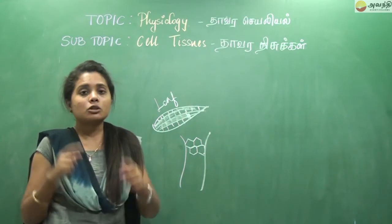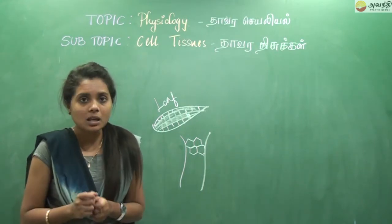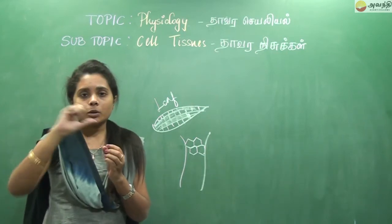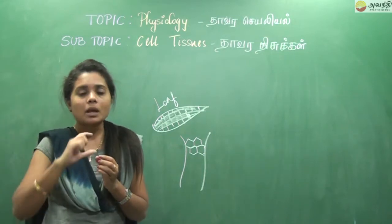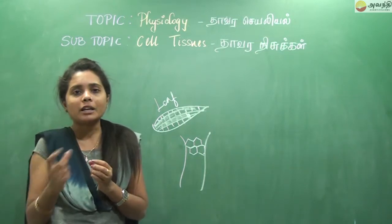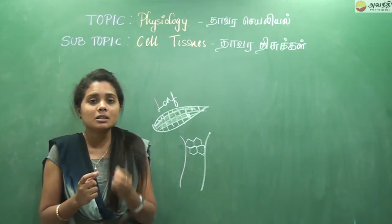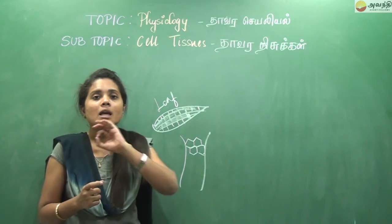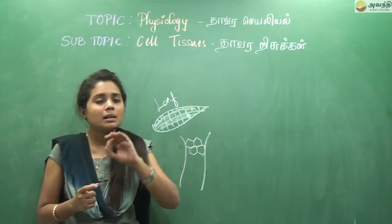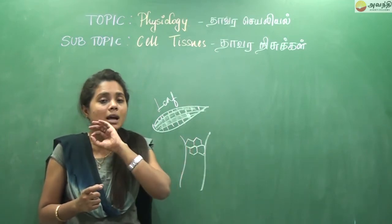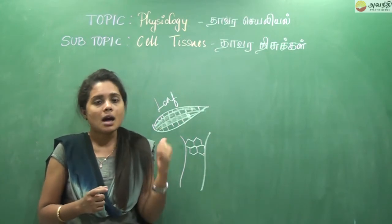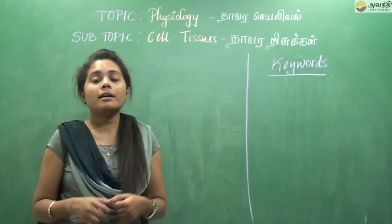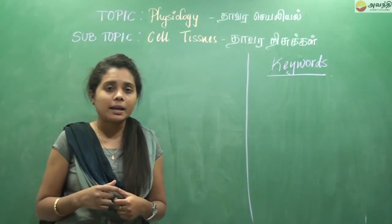Tissues. One plant, one part — what do we call it? Tissues. All cells have similar characteristics. Plant tissues are made of different types of cells.